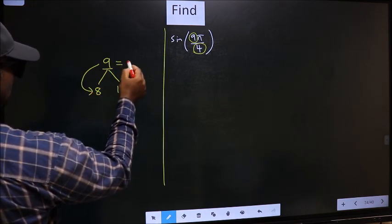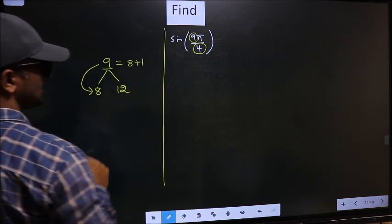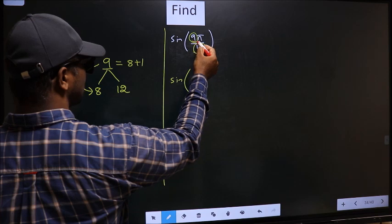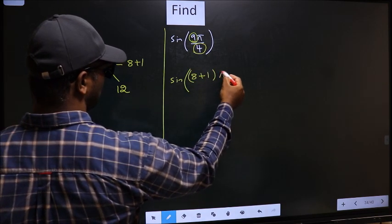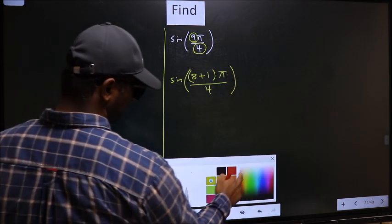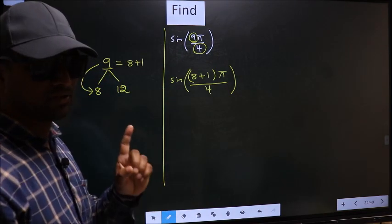So, now 9 should be written as 8 plus 1. So, this will change to sine—in place of 9, you write 8 plus 1—π/4. This is your step 1.